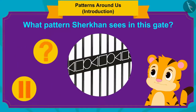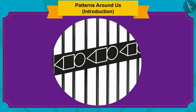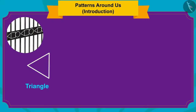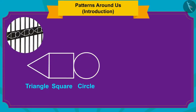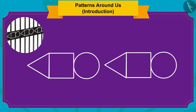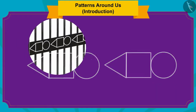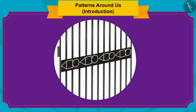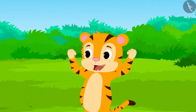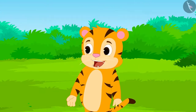You can stop the video and think about it for a while. If we look at the gate carefully, we will find that a triangle is formed first, then after that one square is formed, and finally a circle shape is formed. After the circle, the three shapes are repeated once again in the same order. In this way, a pattern has been made using shapes in this gate. Sher Khan was happy to recognize the pattern on the gate.